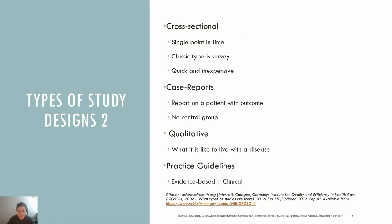Cross-sectional studies involve collecting information on patients with an outcome of interest. There is no control group, and the data is collected at a single point in time, so exposure and outcome are determined simultaneously. The classic type of cross-sectional study is the survey. Because this data is collected only once, cross-sectional studies are relatively quick and inexpensive. An example could be answering a question like how many people had their annual physical.